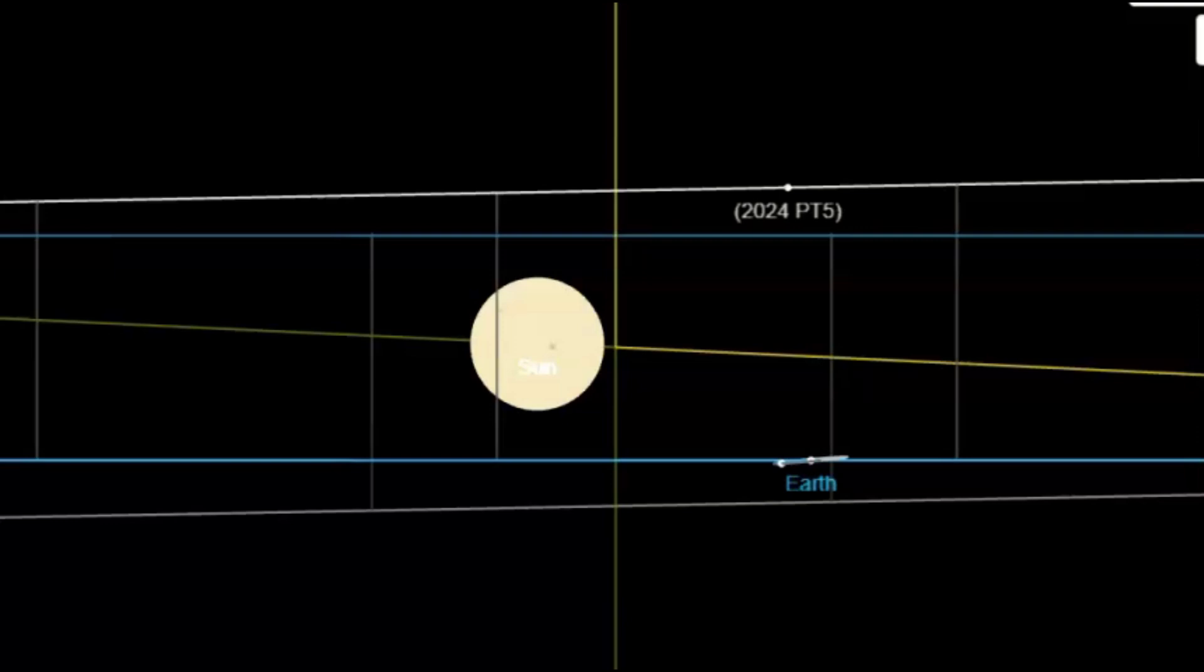They're also saying that asteroid 2024 PT5's close approach to our planet at a relatively low velocity is what allowed the Earth's gravity to temporarily alter its path. According to the published study, for 56.6 days, the little asteroid will change from orbiting the sun to orbiting Earth. But then the sun pulls it back into an elliptical orbit. How they come up with all this information, I have no idea. But they're saying that the asteroid will then have another close approach by Earth on January 9, 2025.